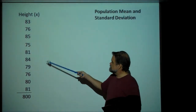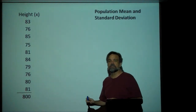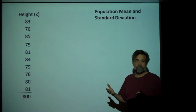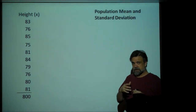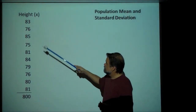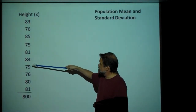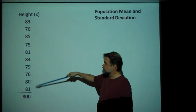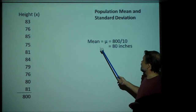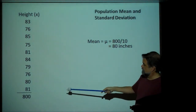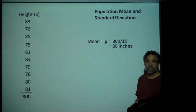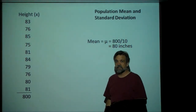What we have here are the heights of 10 basketball players. The first thing I want to do is calculate the mean. We've all averaged numbers before — you add up these numbers and then divide by the number of numbers that you have. So, the mean is 800, our sum, divided by 10, which gives us 80 inches. The mean of these heights is 80 inches. These are basketball players, so they're really tall.